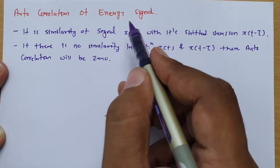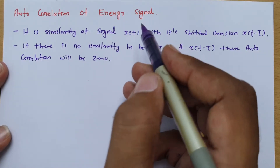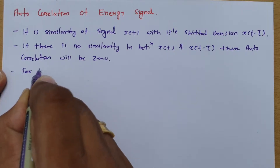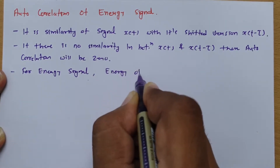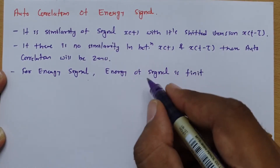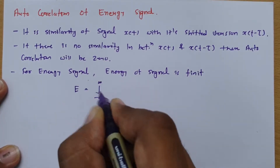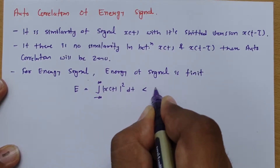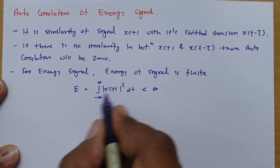Now I will explain autocorrelation of energy signals. Before we apply the autocorrelation function, we should know that the signal is an energy signal. For an energy signal, the energy of that signal is finite. When you calculate energy using the basic formula — integration from minus infinity to infinity of |x(t)|² dt — it should be finite, meaning less than infinity. In that case, x(t) is an energy signal.